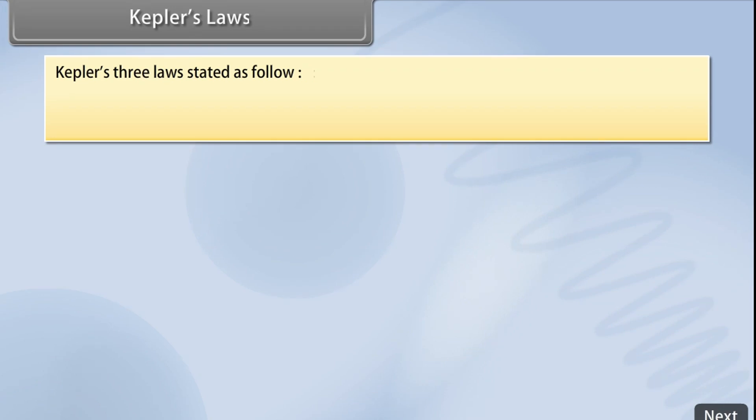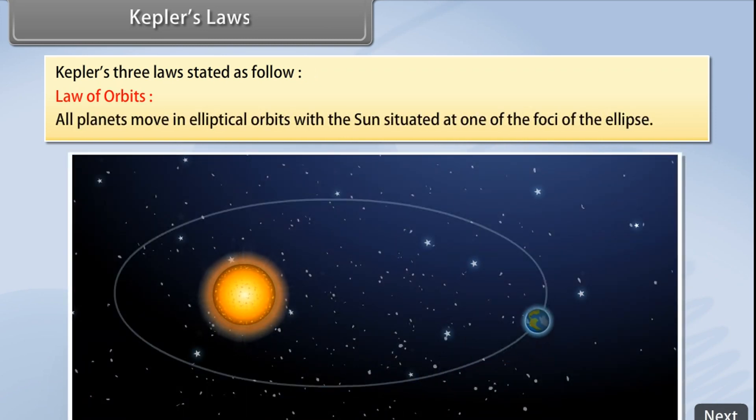Kepler gives three laws. They are stated as Law of Orbits: All planets move in elliptical orbits with the sun situated at one of the foci of the ellipse.